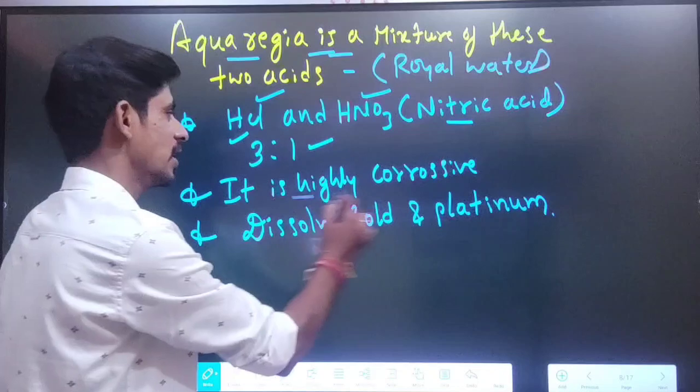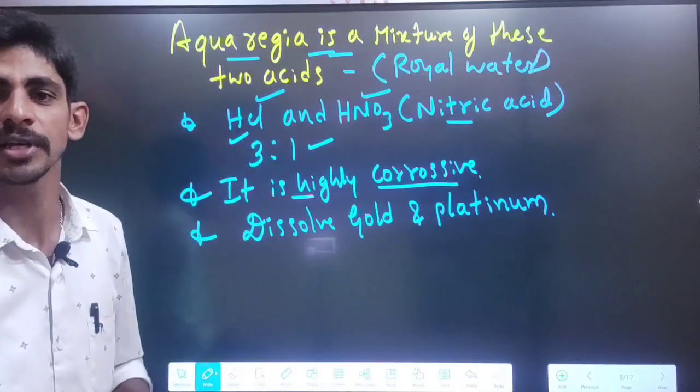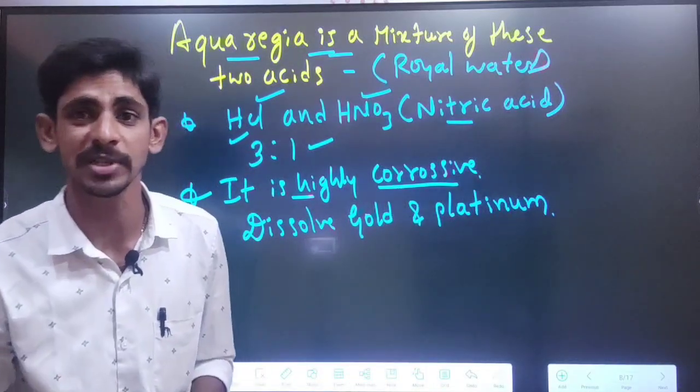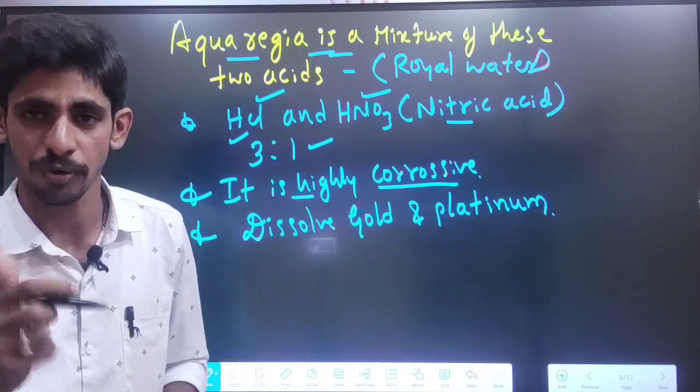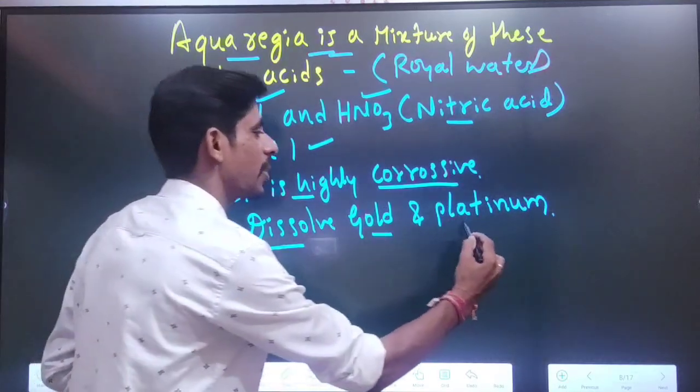It is highly corrosive in nature. Corrosive means it can corrode materials. It can also dissolve gold and platinum.